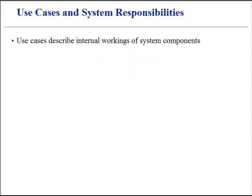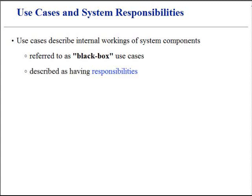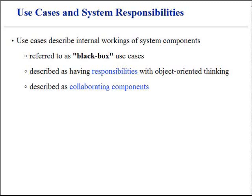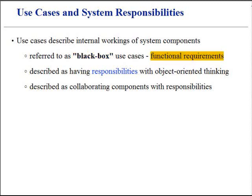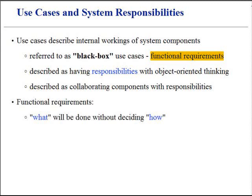Use cases that describe the internal workings of the system, its components or design, are the most common and recommended kind. Such use cases are referred to as black box. The system itself is described as having responsibilities, and the responsibilities unify object-oriented thinking — software elements have responsibilities and collaborate with one another. By defining system responsibilities with black box use cases, it is possible to specify what the system has to do in each case, which becomes the functional requirements.